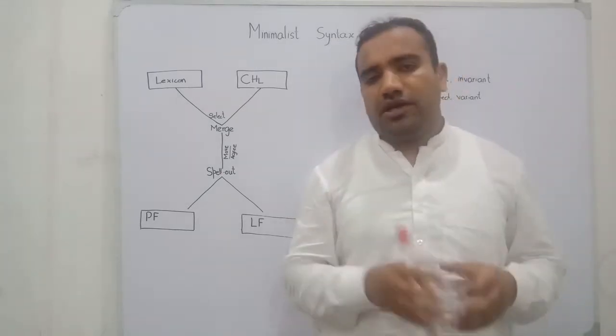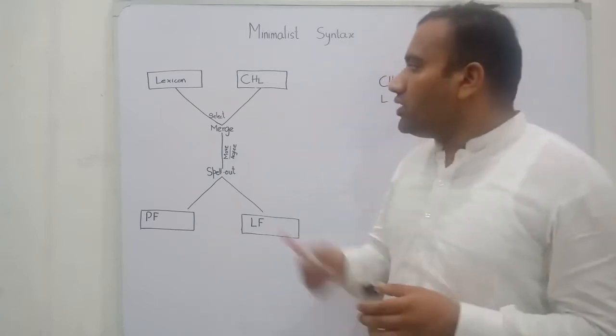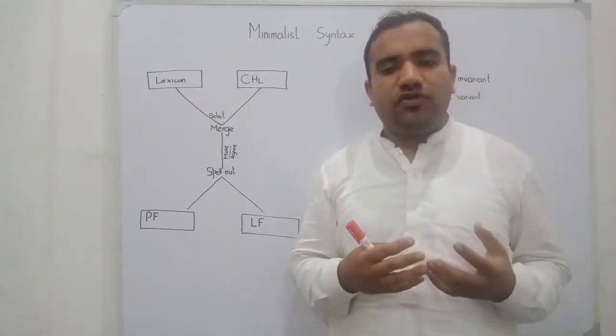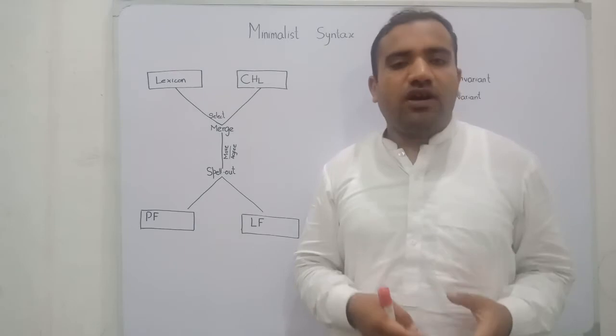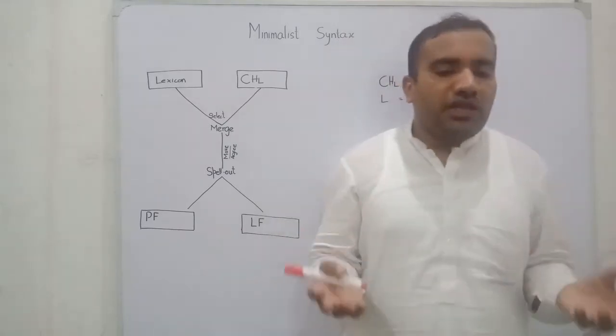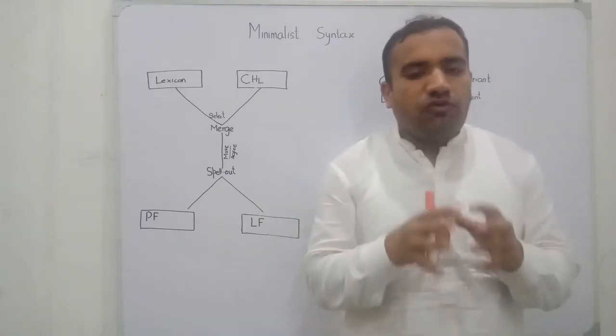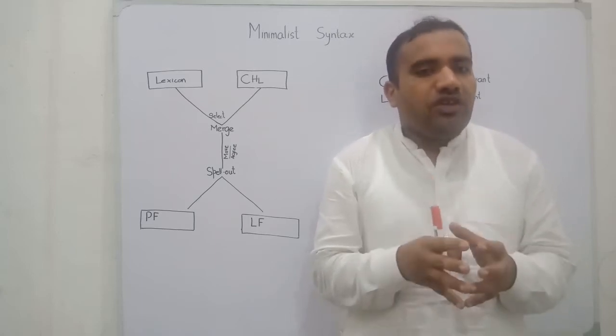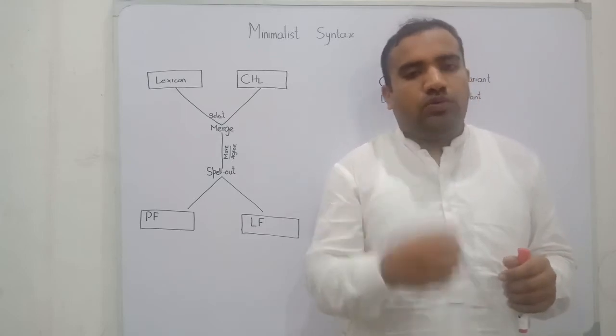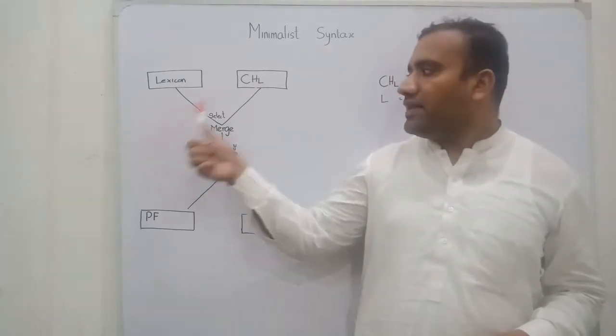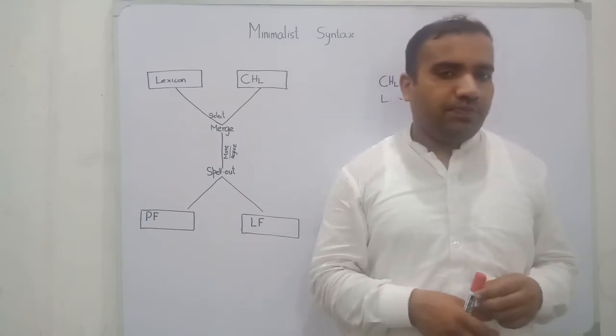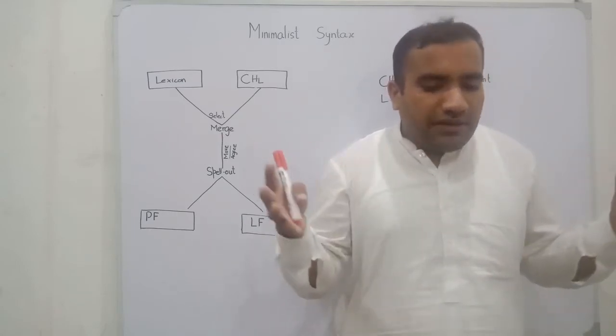his faculty of language forces him to drag that word from the lexicon, and then on that lexicon item some operations will be applied. The next module is the CHL. CHL is basically the computational system for human language. Chomsky stated, on the basis of principles and parametric theories, that human faculty of language is basically composed of two core modules: